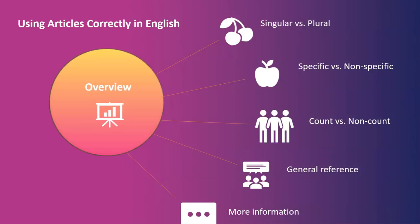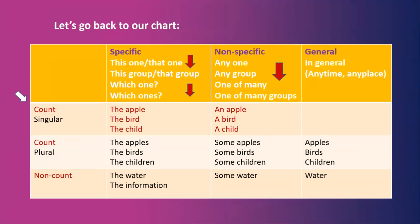Next, we'll talk about specific versus non-specific. Looking at our chart for count singular nouns, we have 'the apple,' 'the bird,' 'the child' — and 'an apple,' 'a bird,' 'a child.' What's the difference? For the first group, we're talking about this apple, or that bird, or that child — a very specific one. For the second, it could be any apple, any bird, or any child. Non-specific.